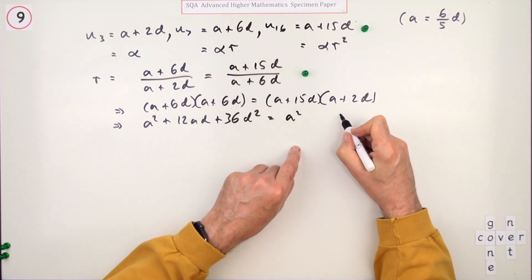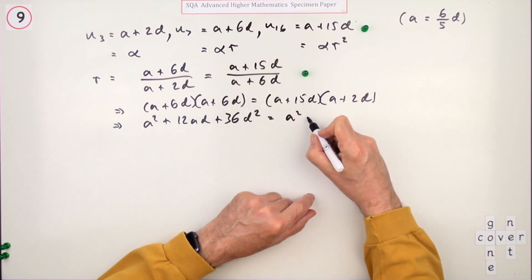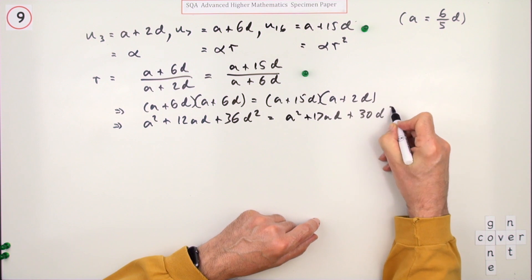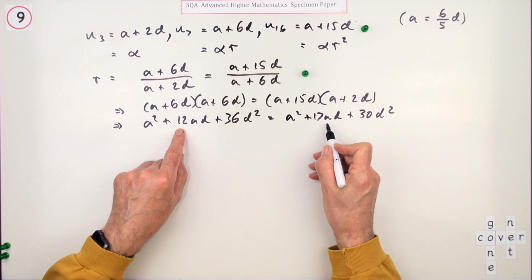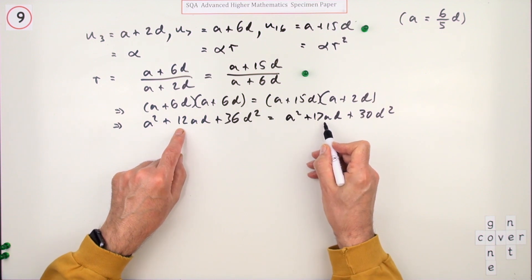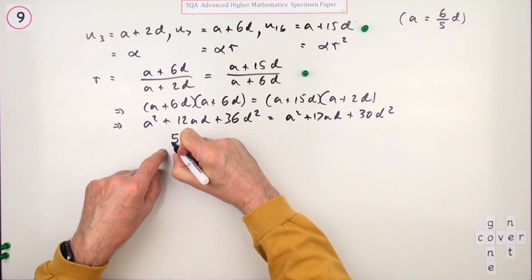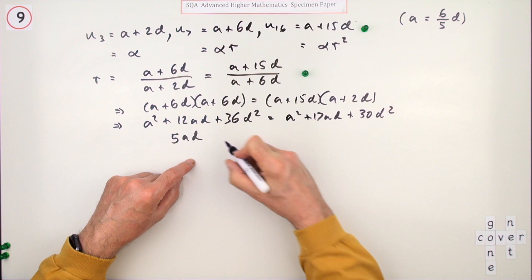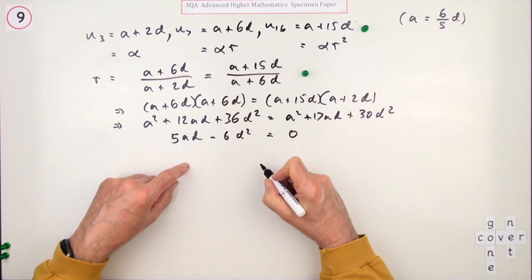A squared plus, this time it's going to be 17ad plus 30d squared. If I bring it all over to one side, 17 take away 12 is 5ad, minus 6d squared equals zero.